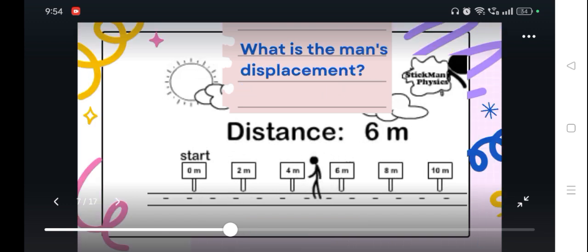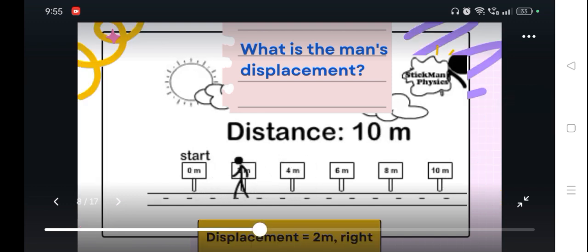So for the man's displacement, as I mentioned earlier, we are only going to consider 2 points: the starting position or the initial position and the final position. At the end of the course, the man stops at 2 meter mark away from the starting point. Therefore, the displacement of the man is equal to 2 meters.